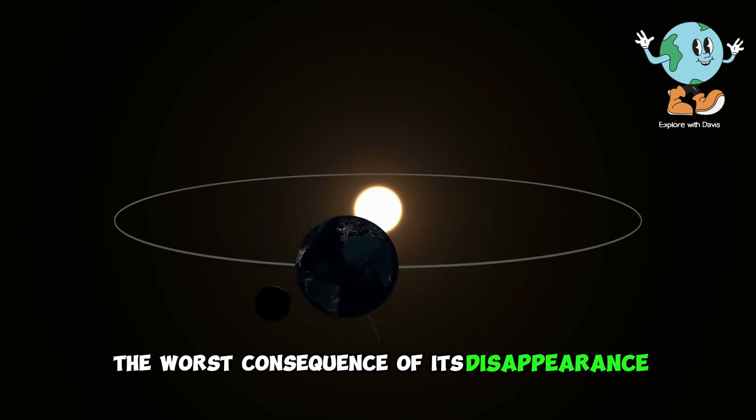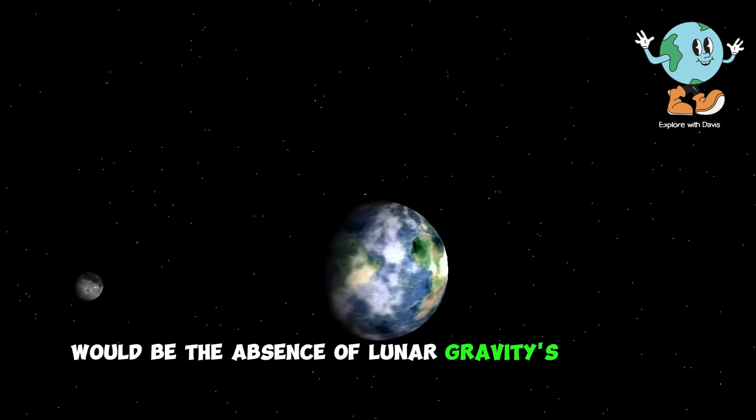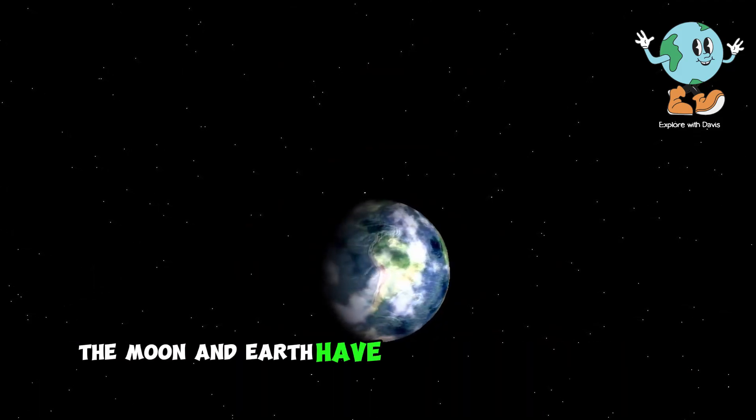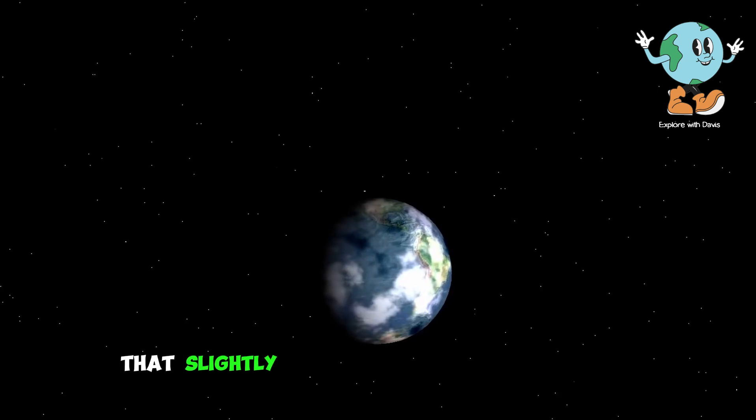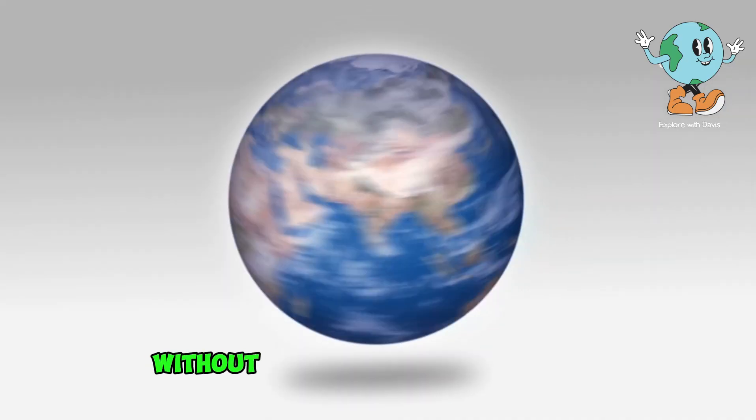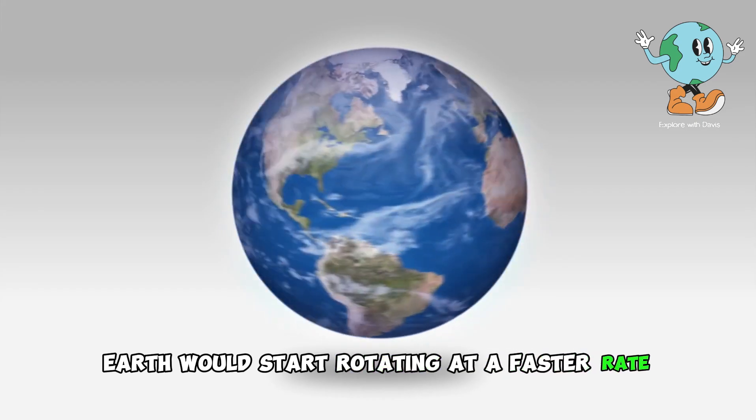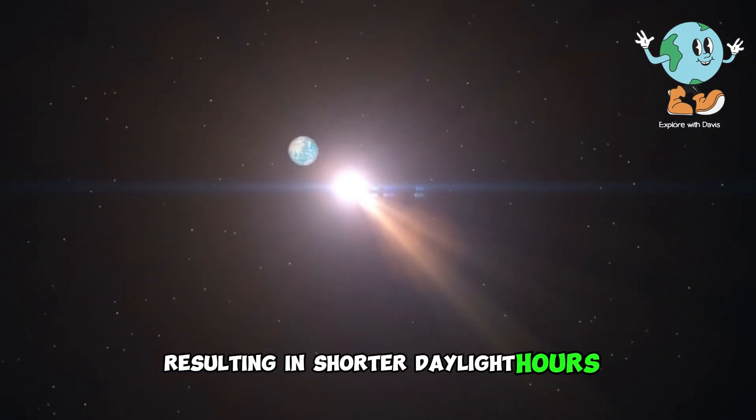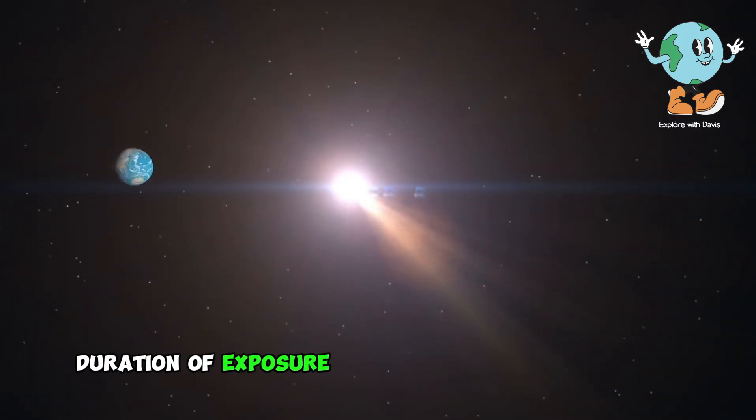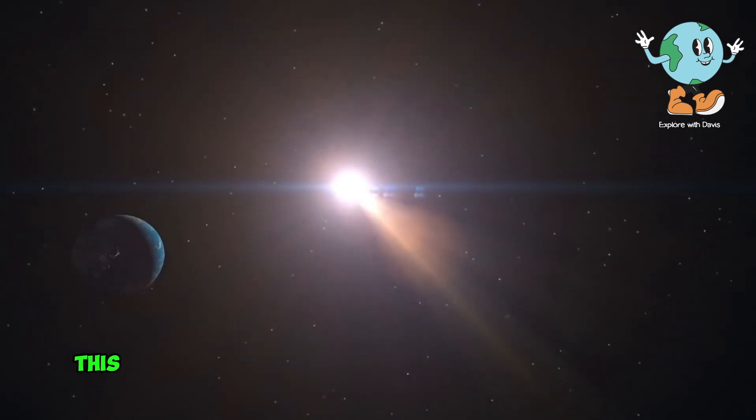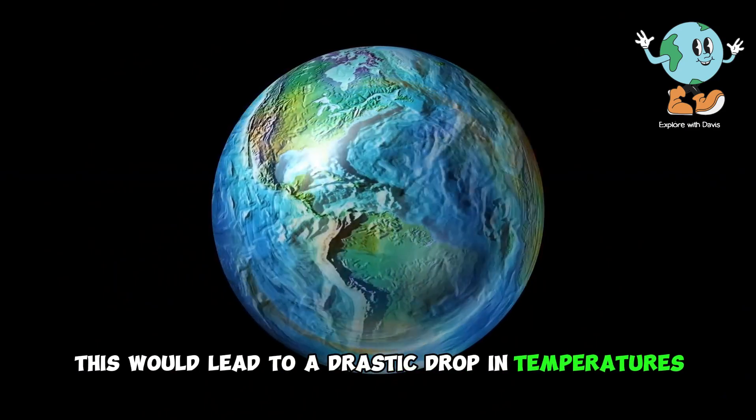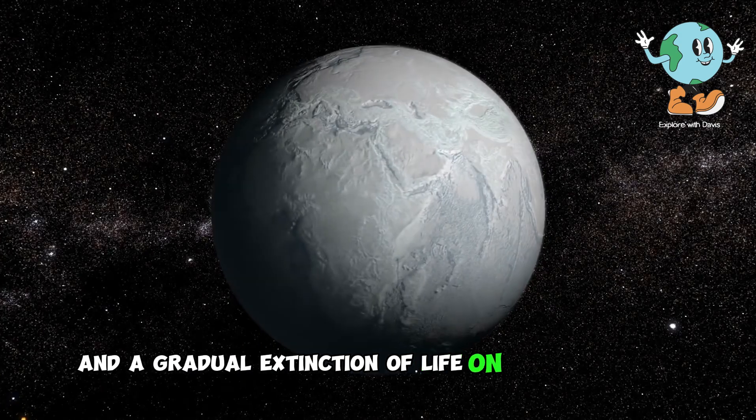The worst consequence of its disappearance would be the absence of lunar gravity's effect on Earth. The moon and Earth have a mutual gravitational pull that slightly slows down Earth's rotation. Without this gravitational influence, Earth would start rotating at a faster rate, resulting in shorter daylight hours and reduced duration of exposure to the sun's heat. Ultimately, this would lead to a drastic drop in temperatures and gradual extinction of life on Earth's surface.